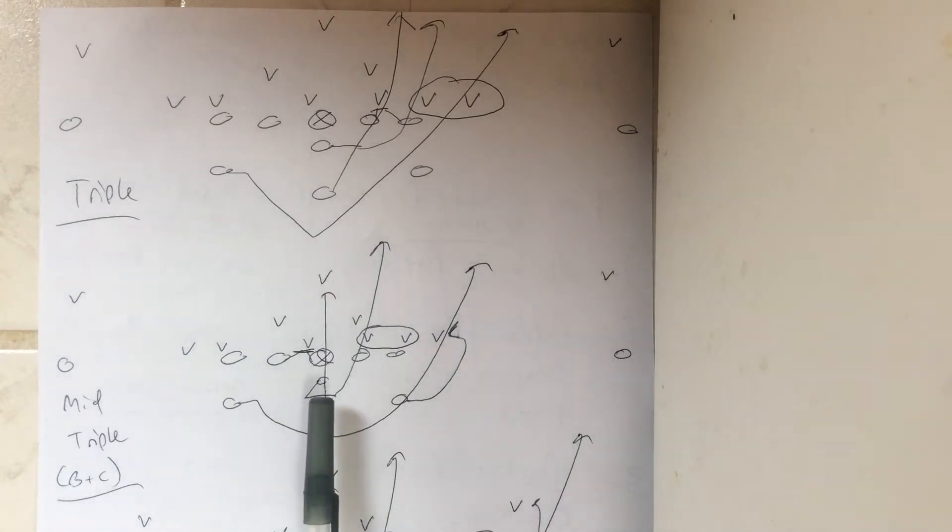So the quarterback will take the snap, jump back, point the ball. If the B-gap defender takes the B-back, who's running a straight line, quarterback replaces the B-gap defender and scores. If the C-gap defender takes the quarterback, the quarterback stops his feet and flicks the ball to the A-back coming around. So you read the B and C-gap defender and you block the D-gap defender.